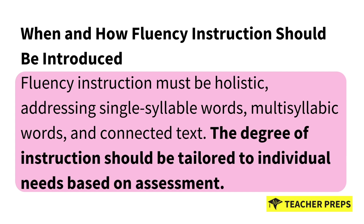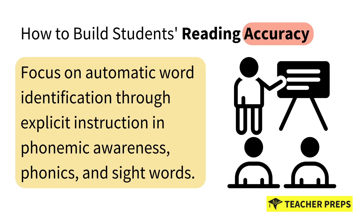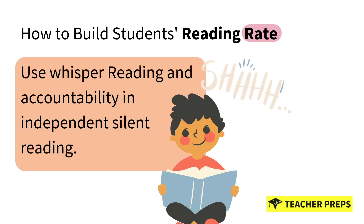The degree of instruction should be tailored to individual needs based on assessment. In order to meet the needs of all learners in the classroom, we need a plan and a strategy. To build students' reading accuracy, focus on automatic word identification through explicit instruction in phonemic awareness, phonics, and sight words. To help build and strengthen students' reading rate, strategies you need to know for your exam include whisper reading and accountability in independent silent reading.